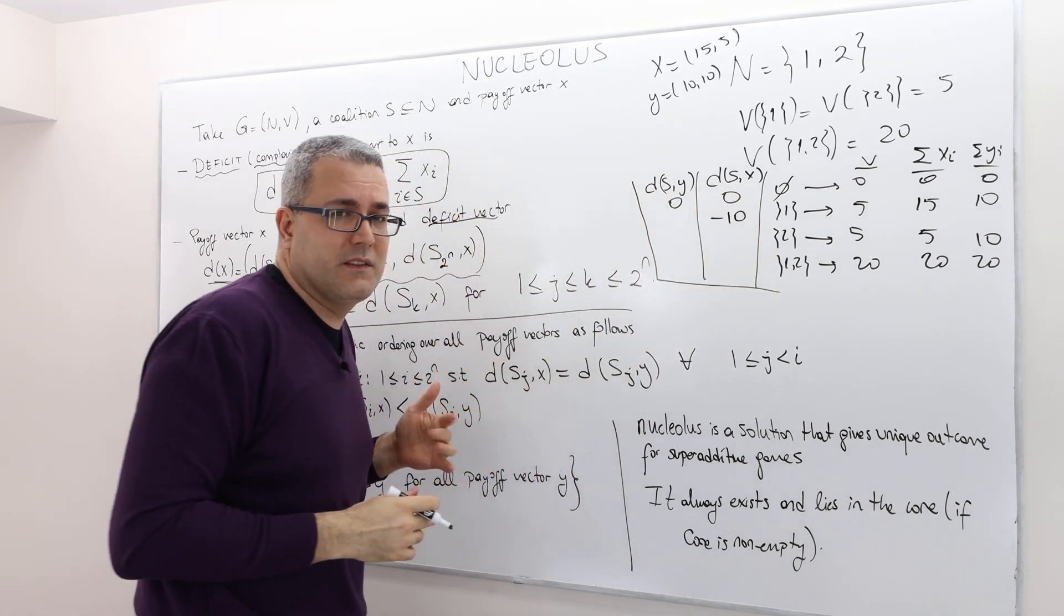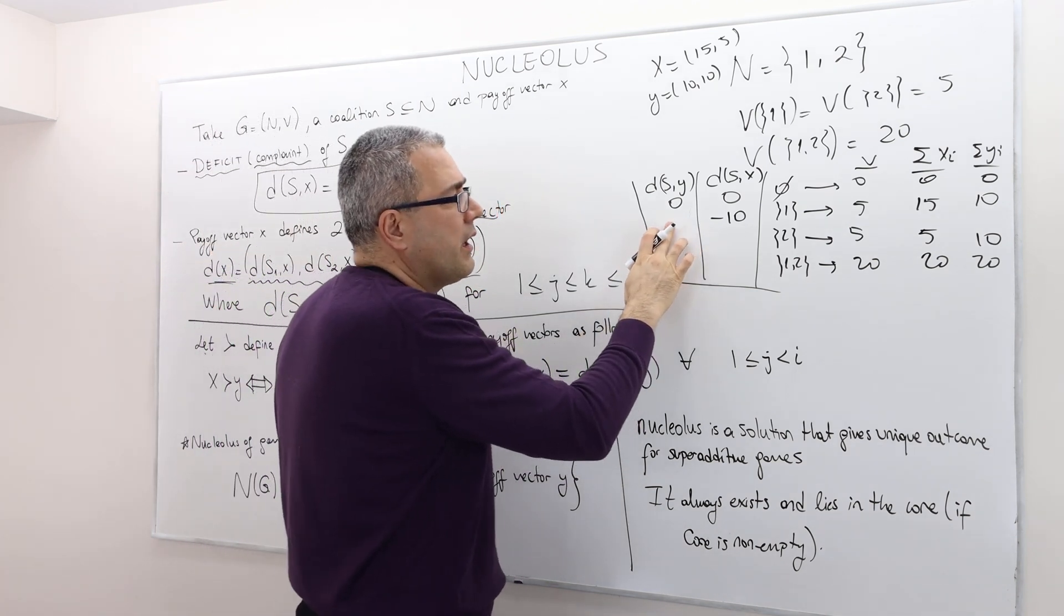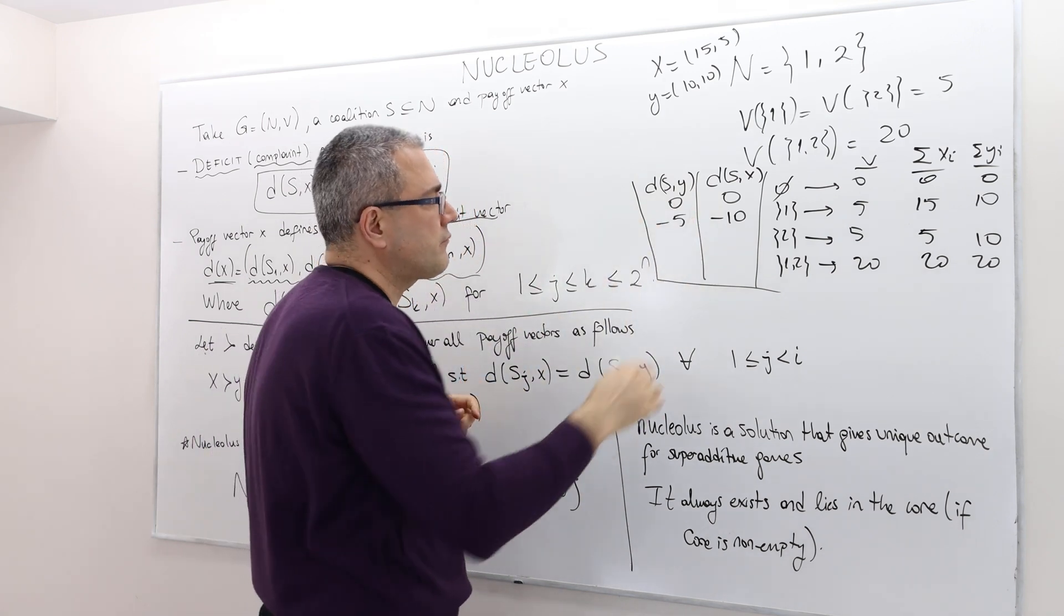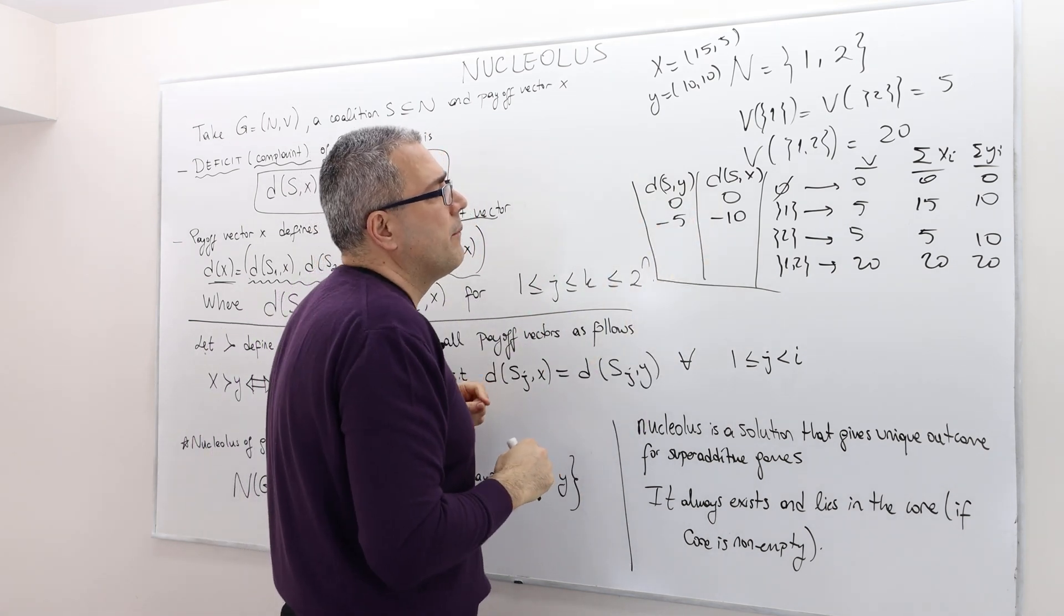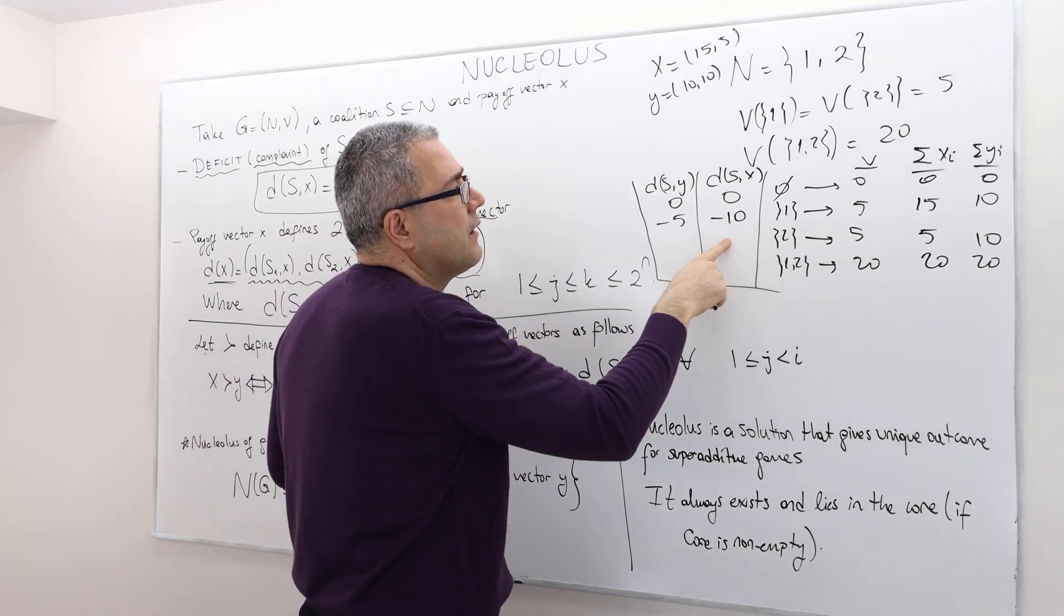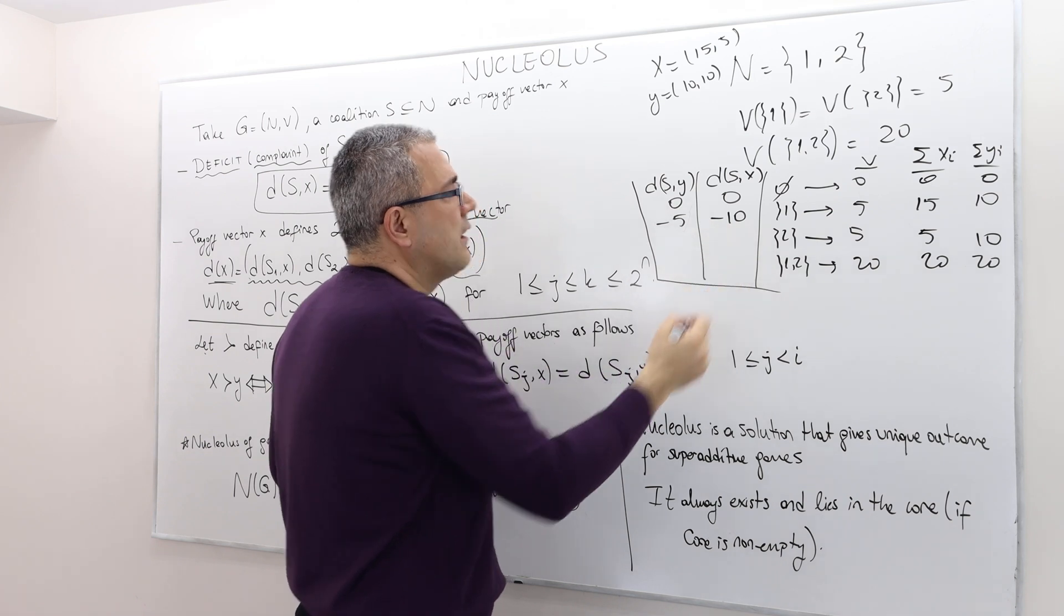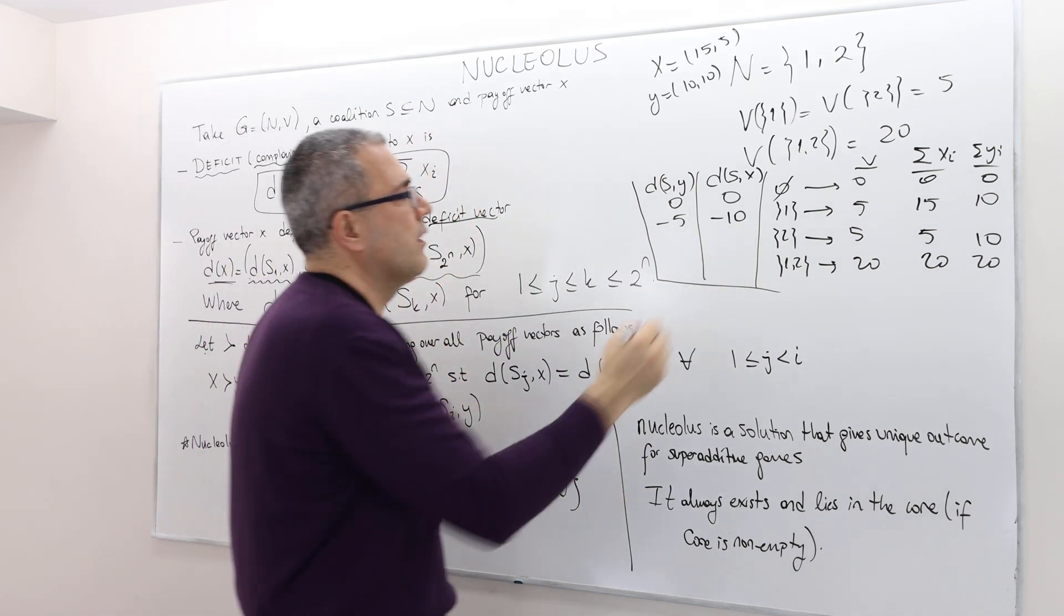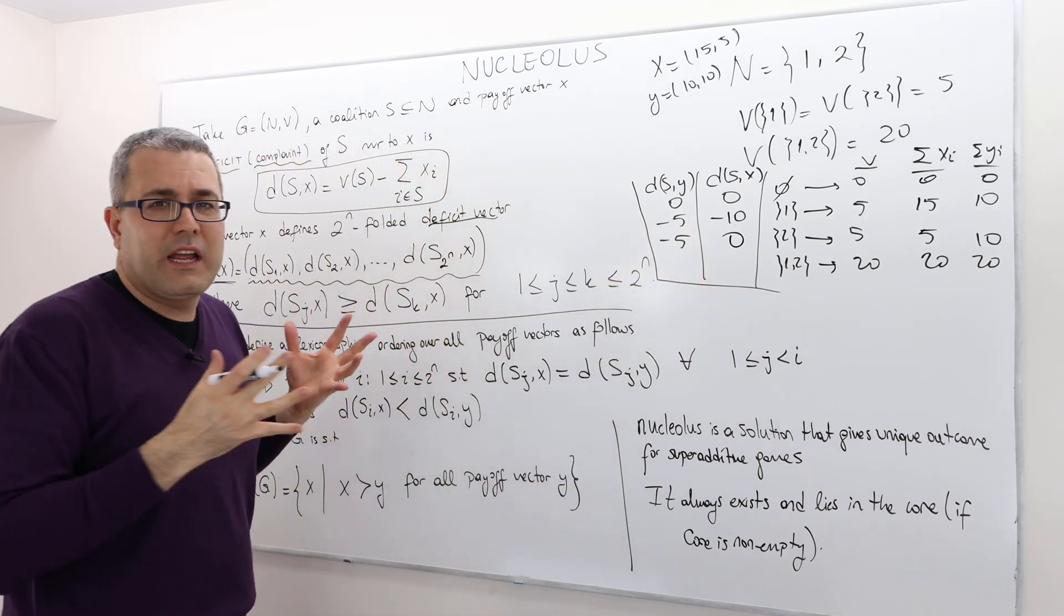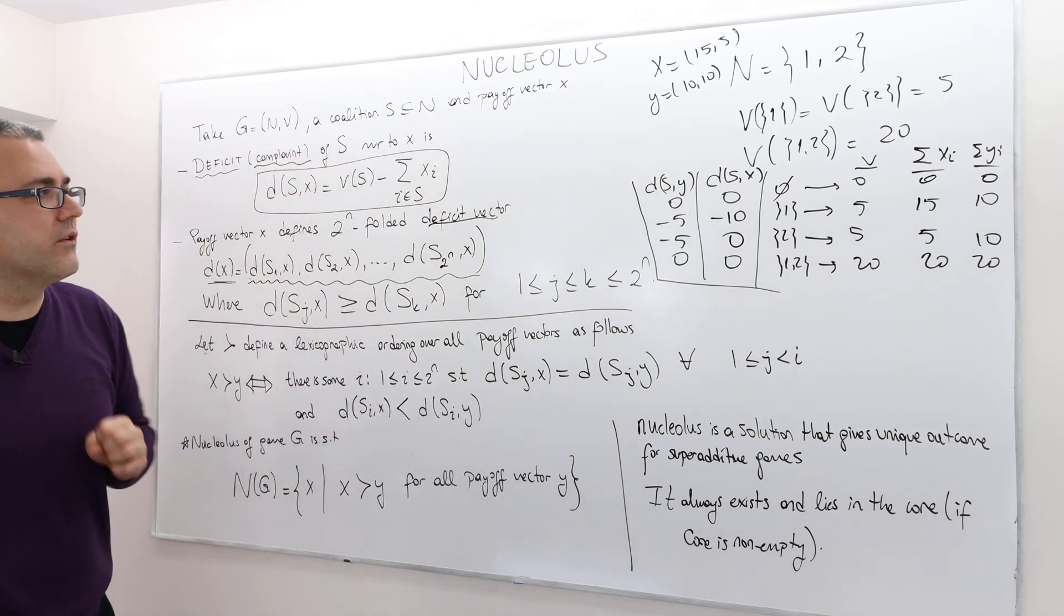Clearly, this is not deficit. This is a beautiful thing. Under y, however, it is minus 5. Now, what about the coalition 2? Under x, it is 5 minus 5, 0. And then under y, it's minus 5. And then the grand coalition, under both x and y, they're both 0.